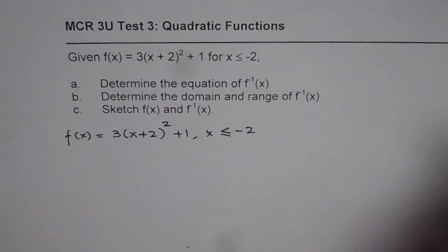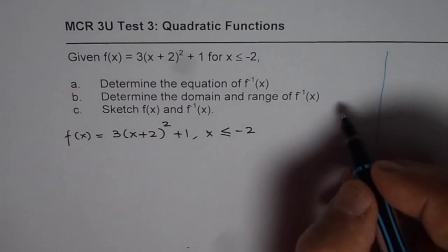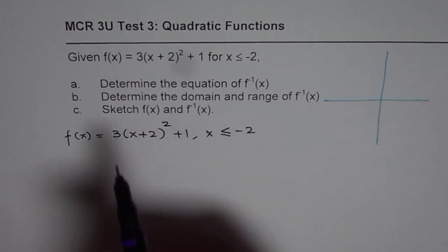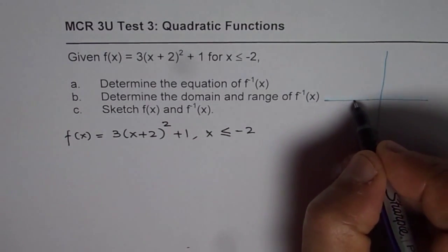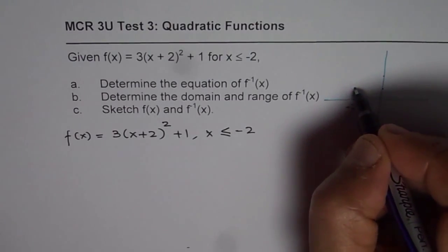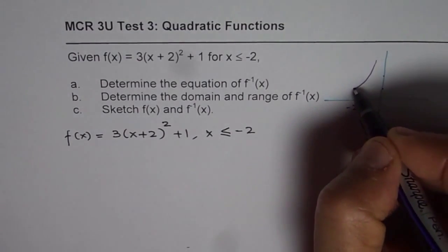I know we need to sketch it at the end, but let's look at it first. The function given to us is a parabola, whose vertex is minus 2 and 1. It opens upwards. So that is the parabola.